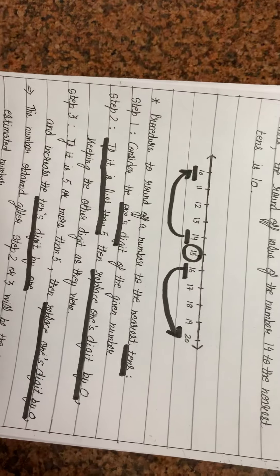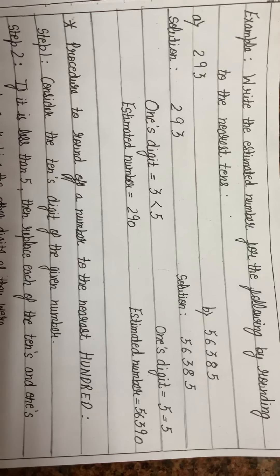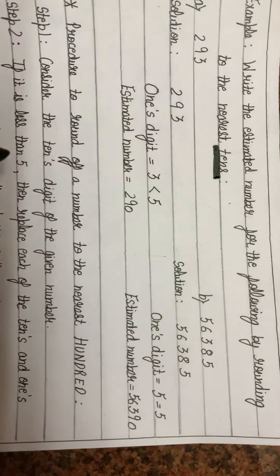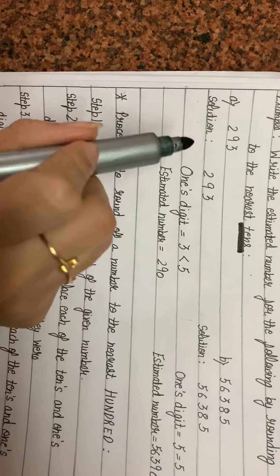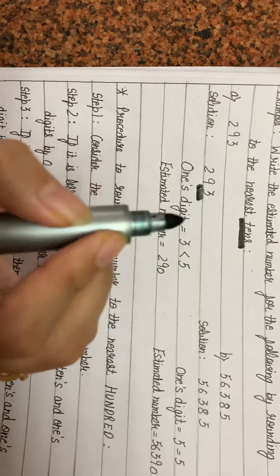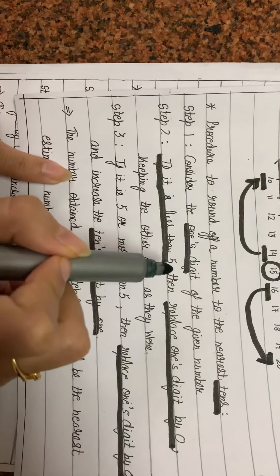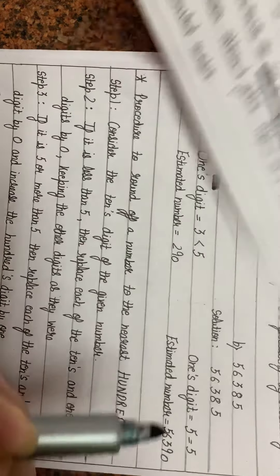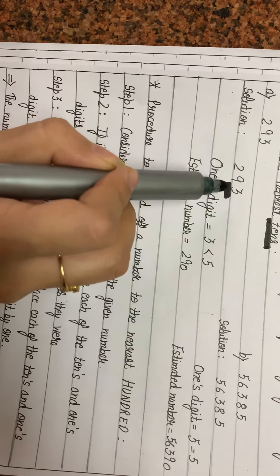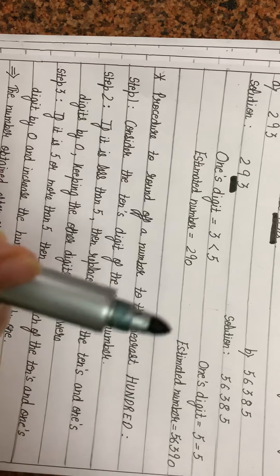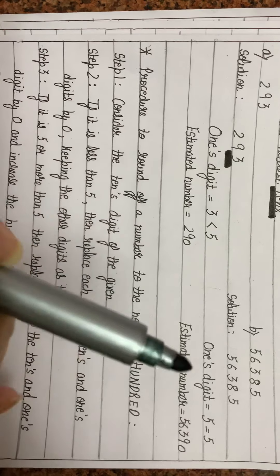Let's understand with examples. We have to round off to the nearest tens. Consider 293 — the ones digit is 3, which is less than 5. According to step 2, we replace ones digit by 0, keeping other digits as they were. So the estimated value of 293 is 290. Since ones digit was less than 5, we replace it by 0 and other digits remain as they are.